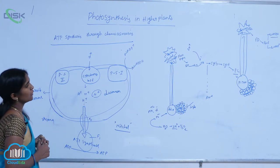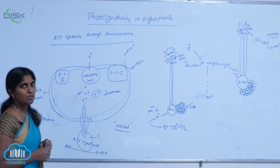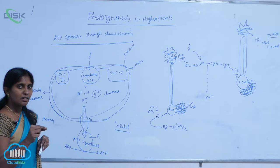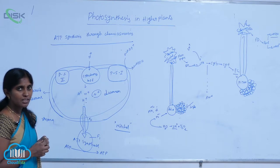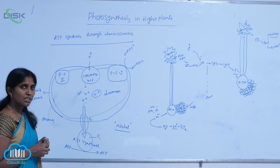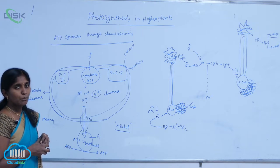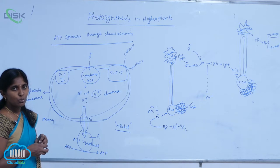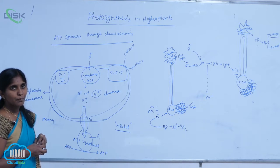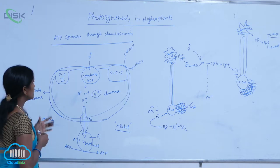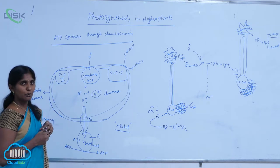During cyclic and non-cyclic photophosphorylation, electrons are transmitted among electron carriers and protons are translocated into the lumen. This proton translocation creates proton gradients. You can see here how protons accumulate in the lumen.